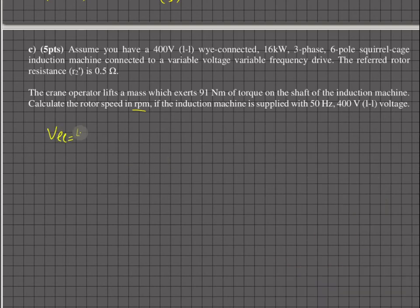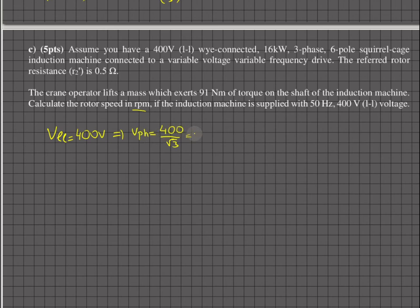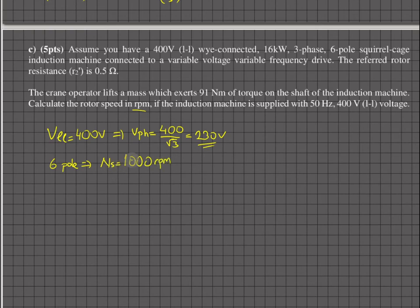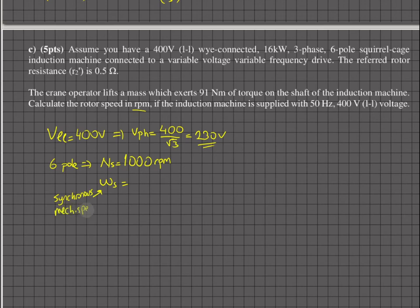The machine is Y-connected, so convert to per-phase: phase voltage = 400 / √3 = 230 volts. For a six-pole machine supplied at 50 Hz, the synchronous speed is: Ns = 120f / poles = 120 × 50 / 6 = 1000 RPM. Don't forget to use the mechanical synchronous speed ωs when doing torque calculations — that's on the mechanical system side.